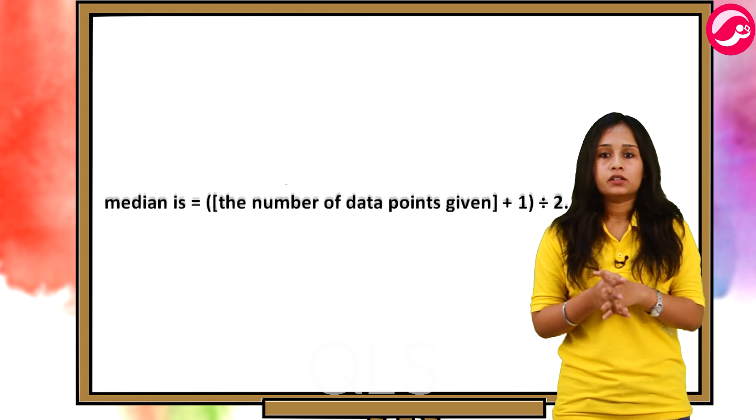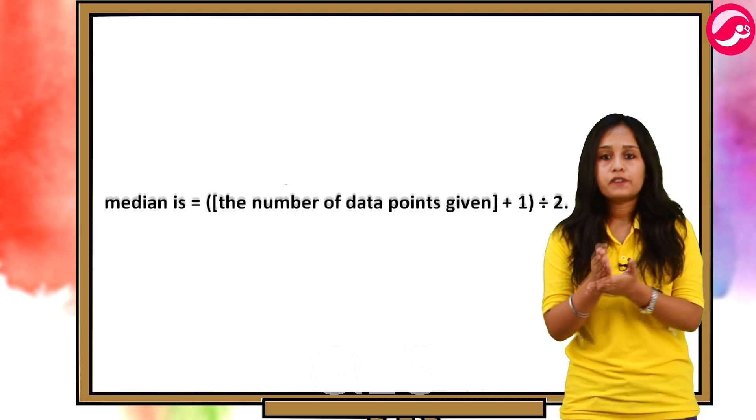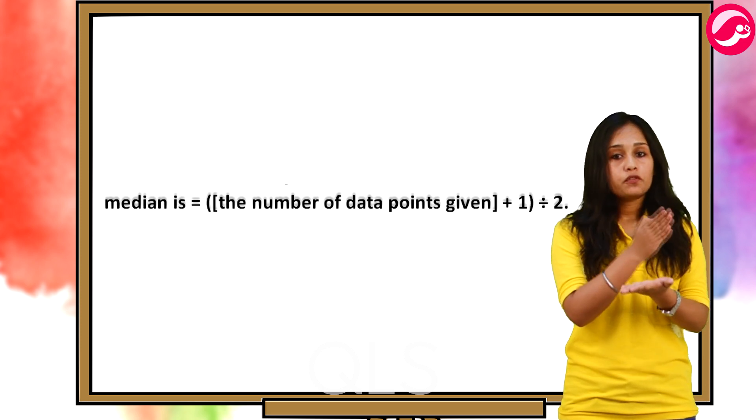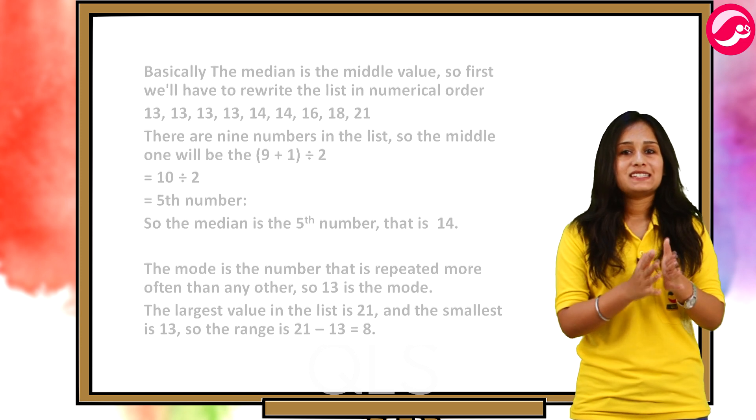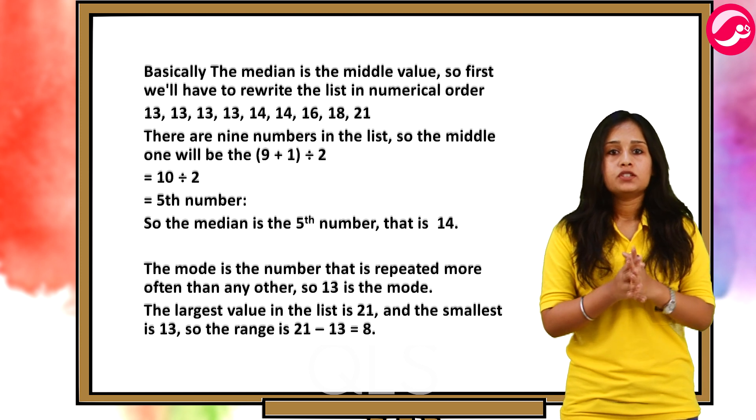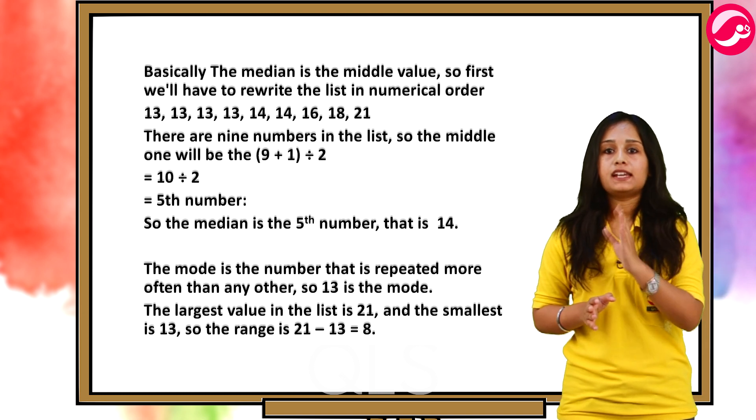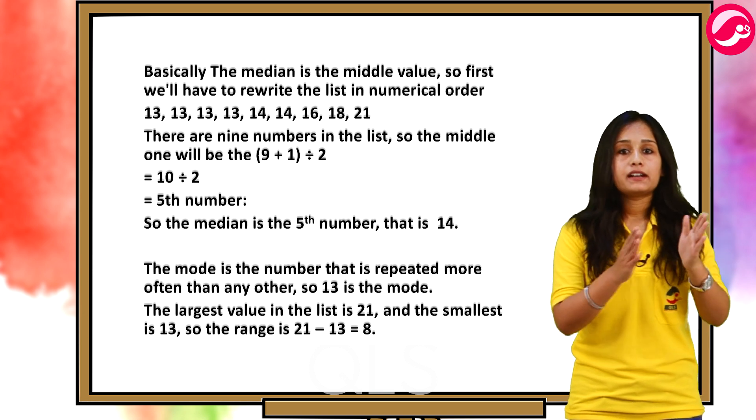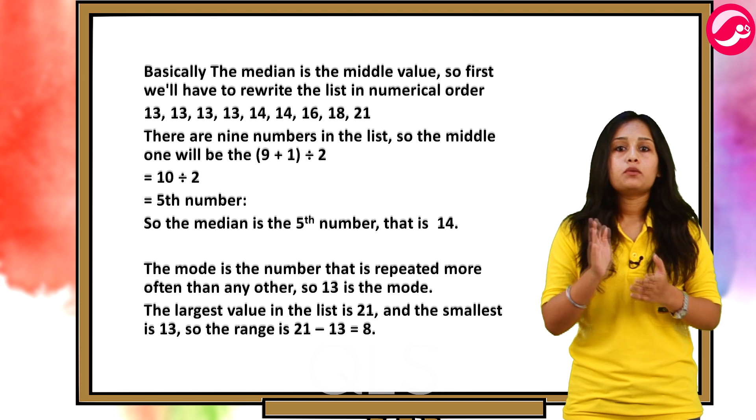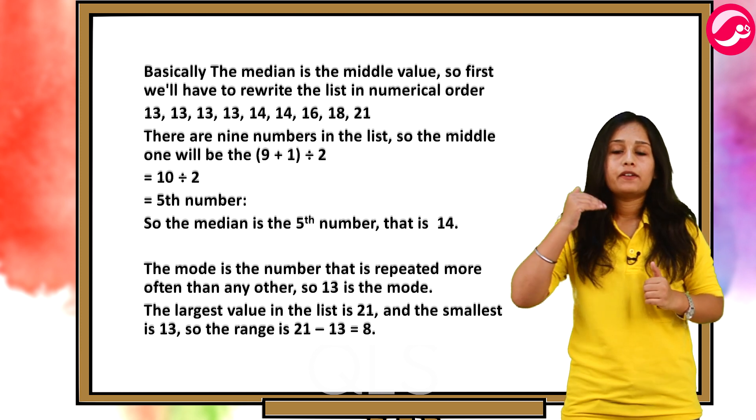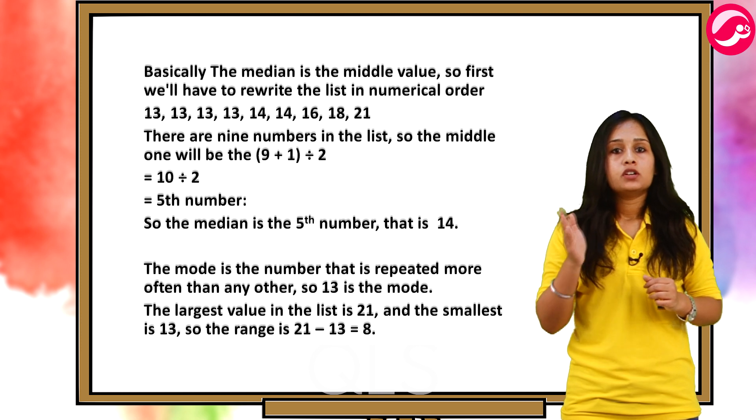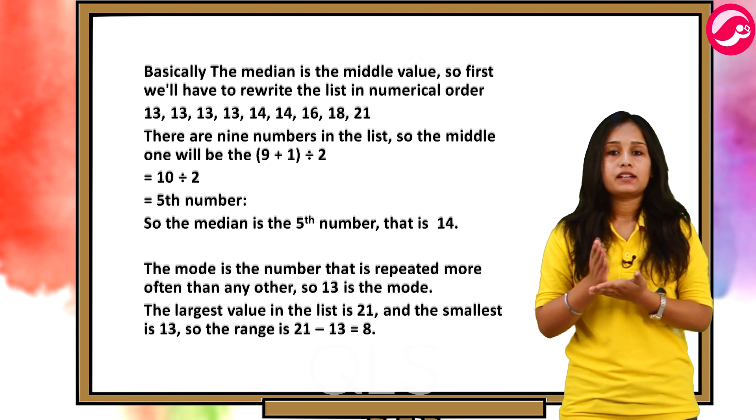Now, talking about the median, note that the formula for the place to find the median is the number of data points given plus 1 divided by 2. Basically, the median is the middle value. So, first we will have to rewrite the list in numerical order. There are 9 numbers in the list. So, the middle one will be 9 plus 1 divided by 2 that is 10 divided by 2 that is the fifth number. So, the median is the fifth number that is 14.